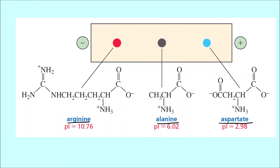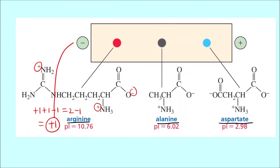For arginine, there is one positive charge, another positive charge, and one negative charge — so +1 +1 −1 gives an overall charge of +1. Since arginine is positively charged, the red spot is closer to the negatively charged electrode, that is the cathode.